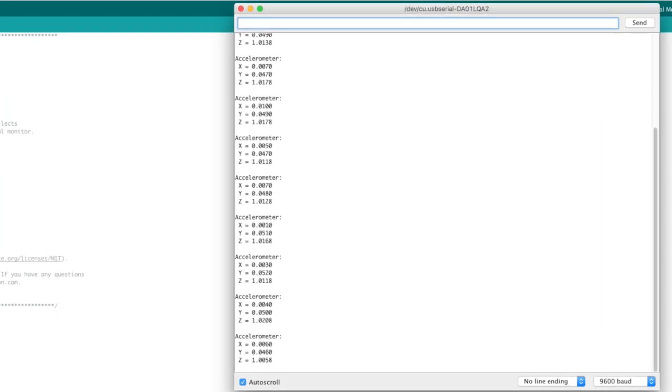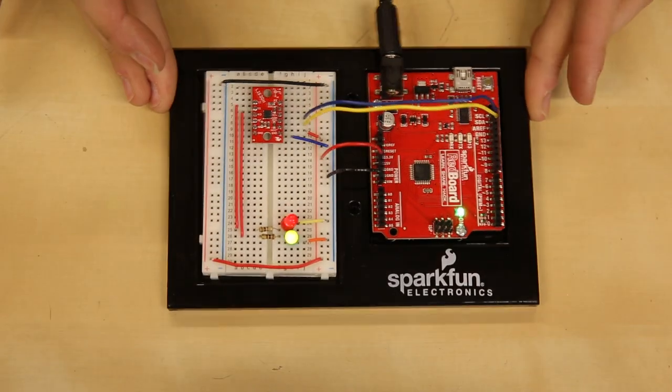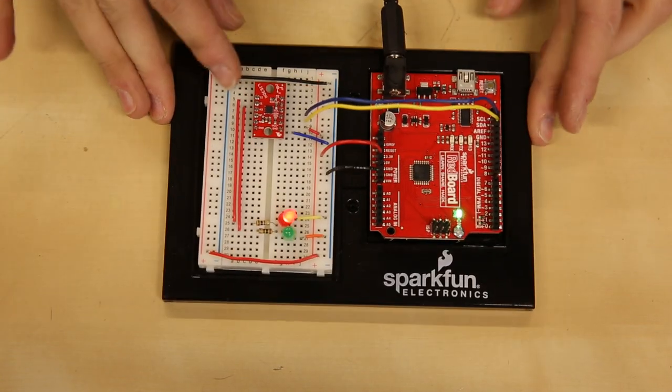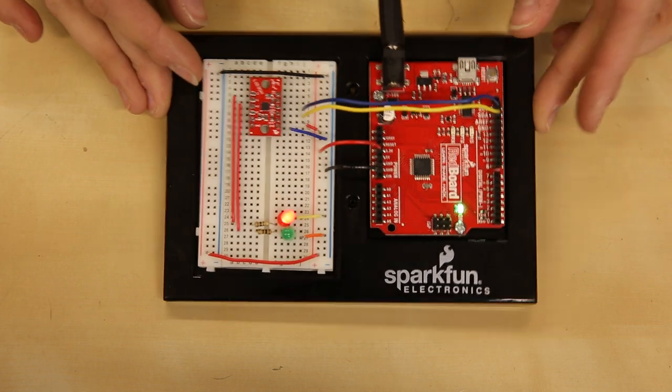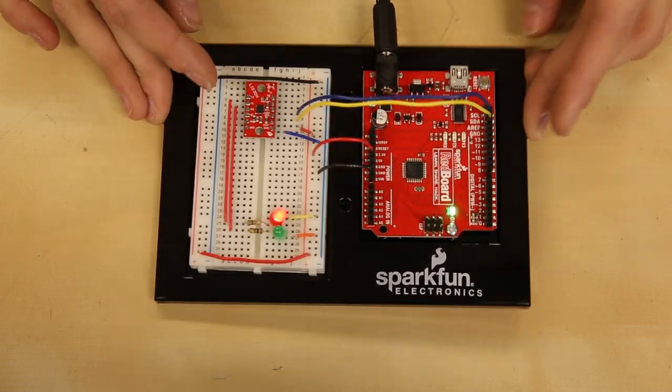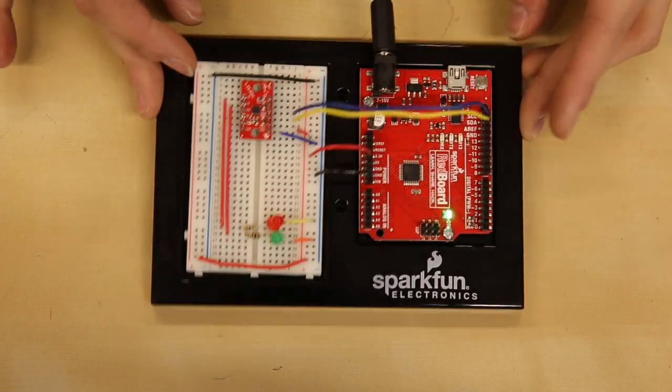The LIS-3DH has two independent programmable interrupt generators. Interrupt signals can behave as free-fall, wake-up, 6D and 4D orientation detection, and click detection.